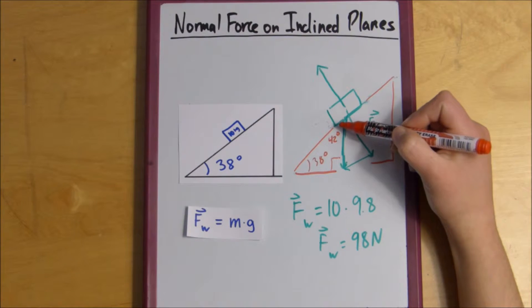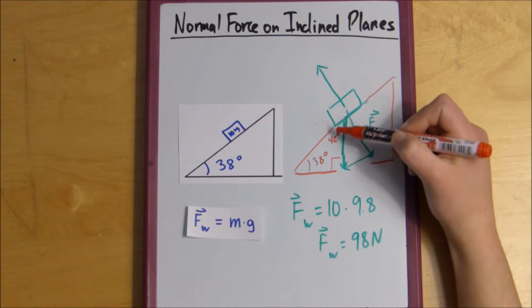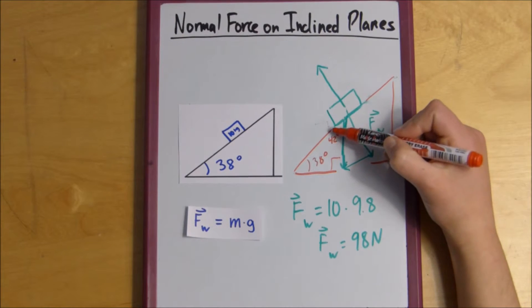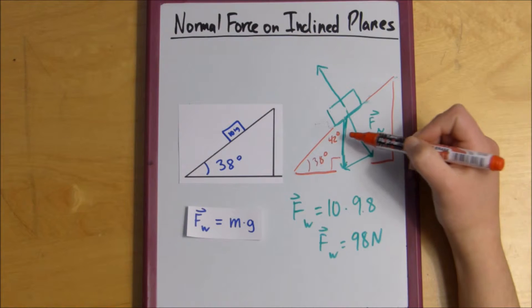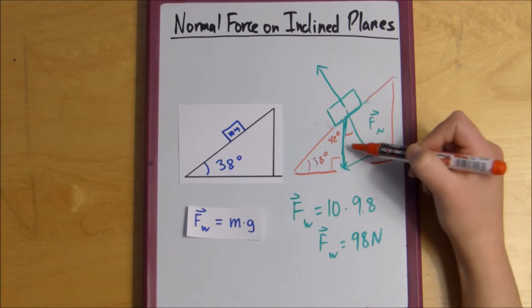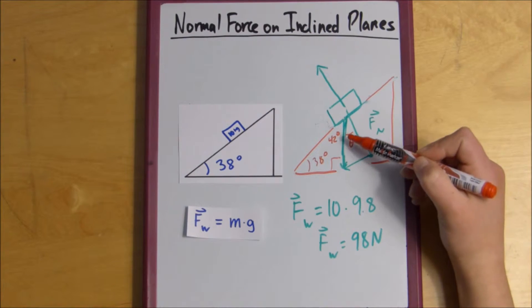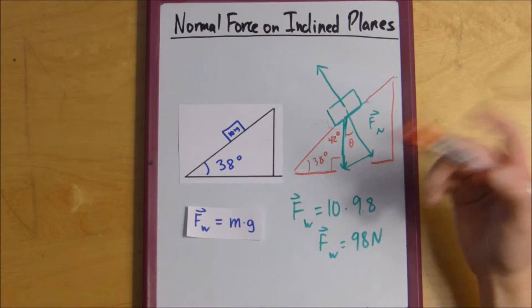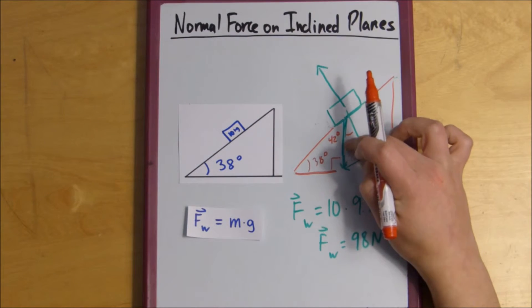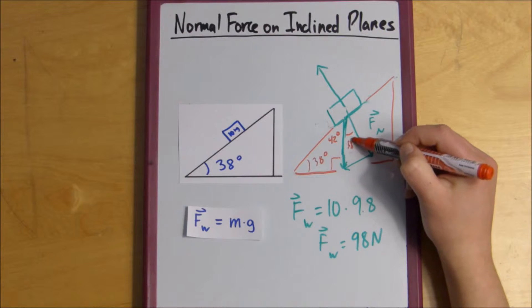And now you'll also notice here that these two triangles make another right angle with each other. Do you see it? So if we're trying to find this angle here, we can do 90 minus 42, which conveniently enough is 38. So this is 38 degrees.